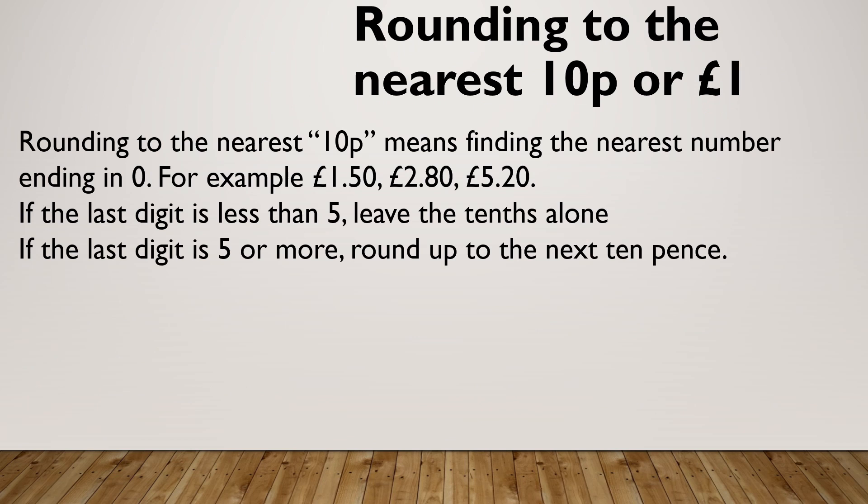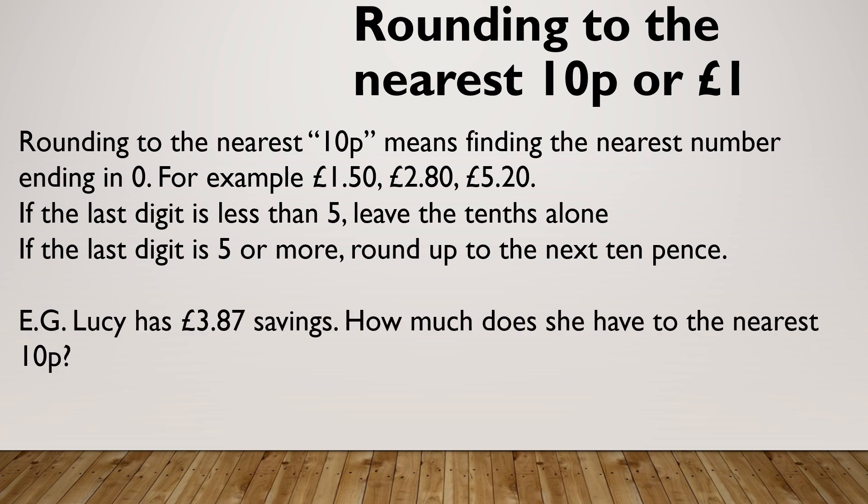Rounding to the nearest 10 pence means finding the nearest number ending in zero — so for example £1.50, £2.85, £5.20. It's the pennies I'm looking at. If those pennies are 5 pence or above, I'm rounding that next 10 pence up. If it's four or below, I'm leaving that alone.